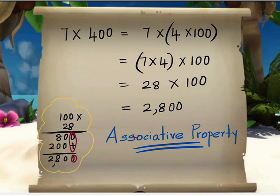0 comes down. 0 plus 0 is 0. 8 plus 0 is 8. And 2 can be written as such.